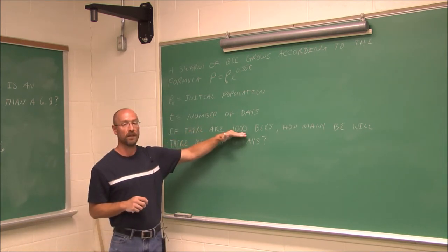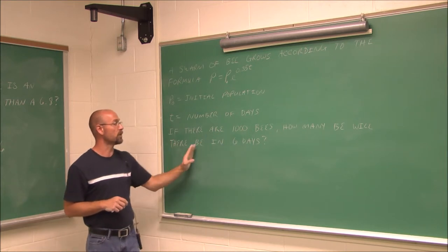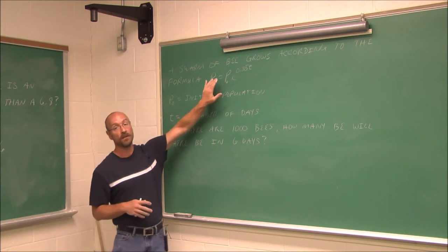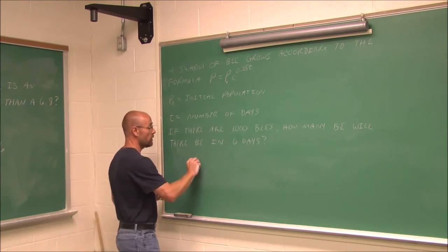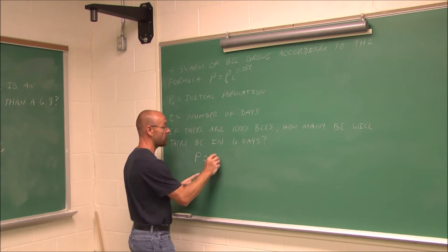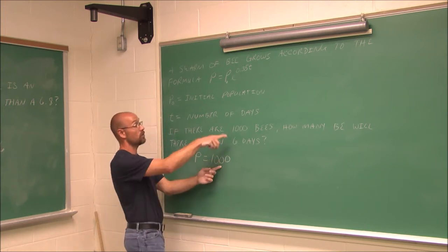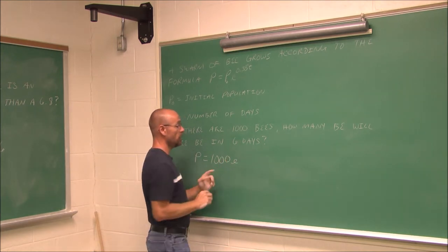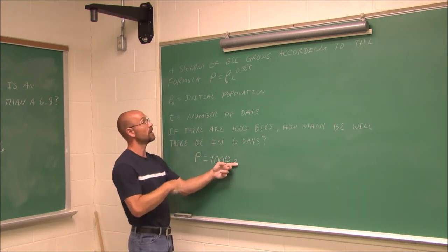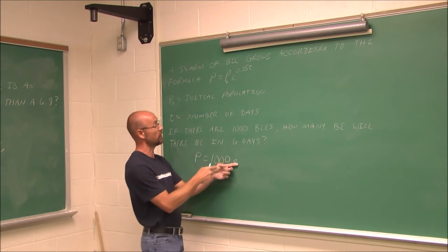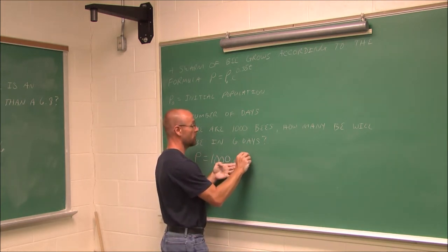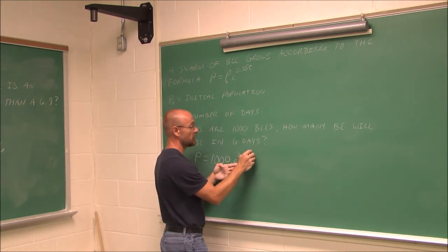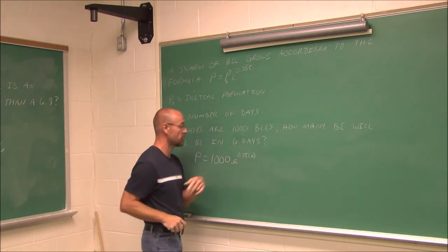If we want to know, if we start with 1,000 bees, how many more bees will there be in six days? We essentially just have to evaluate this equation. We want to know if we have 1,000 bees, that's what we're starting with, our initial population. e, because these bees reproduce exponentially, of e to the 0.35, and t represents the number of days, which is 6. We can multiply that by 6.